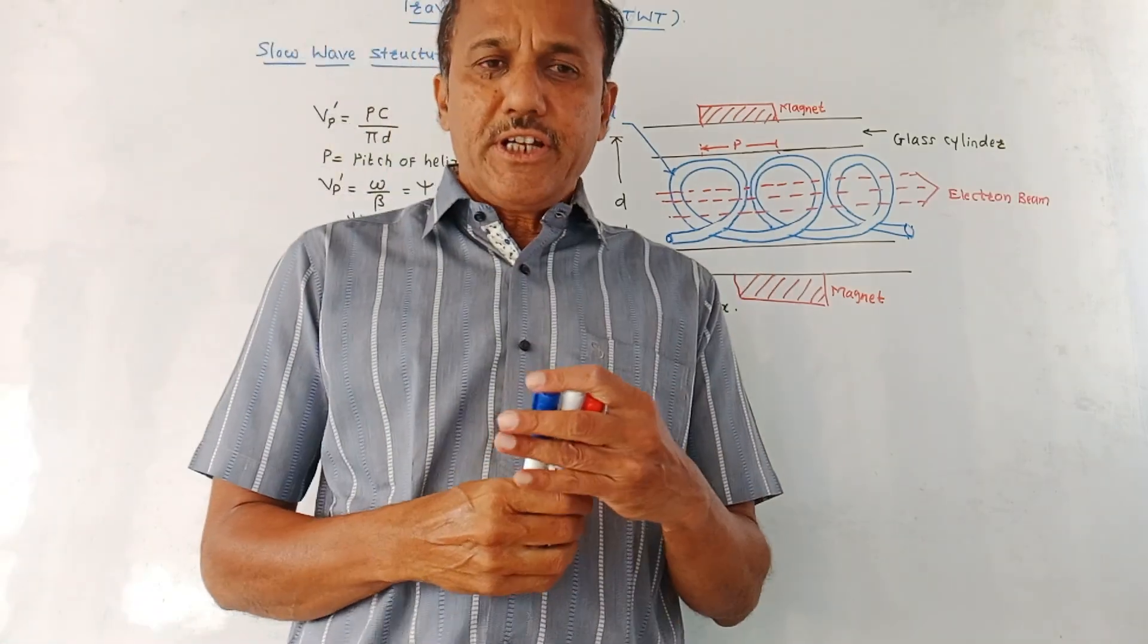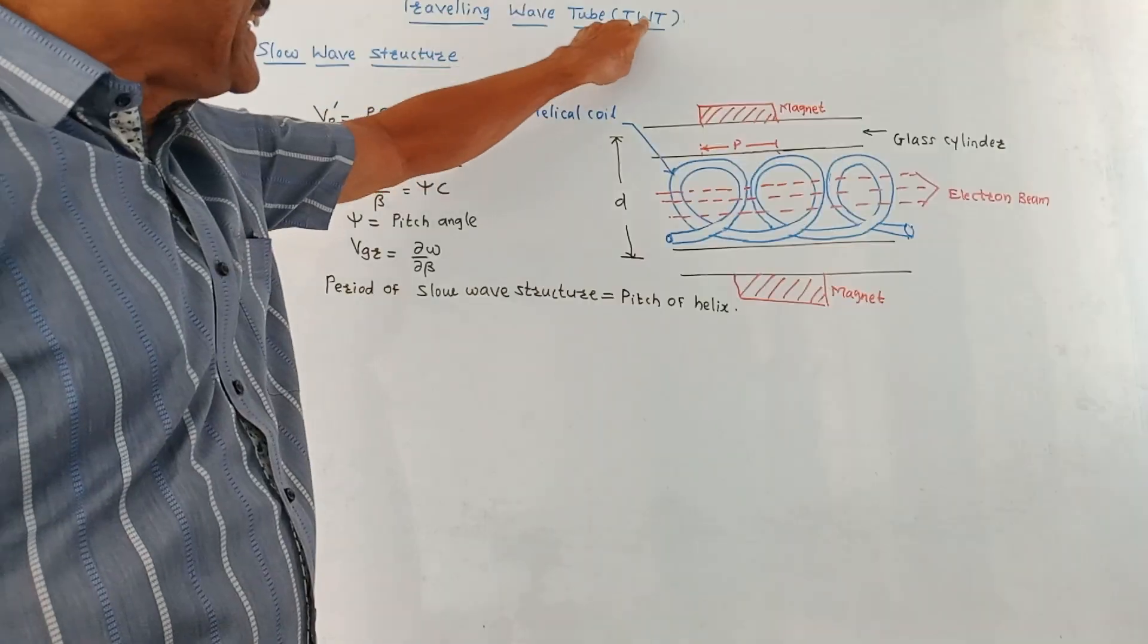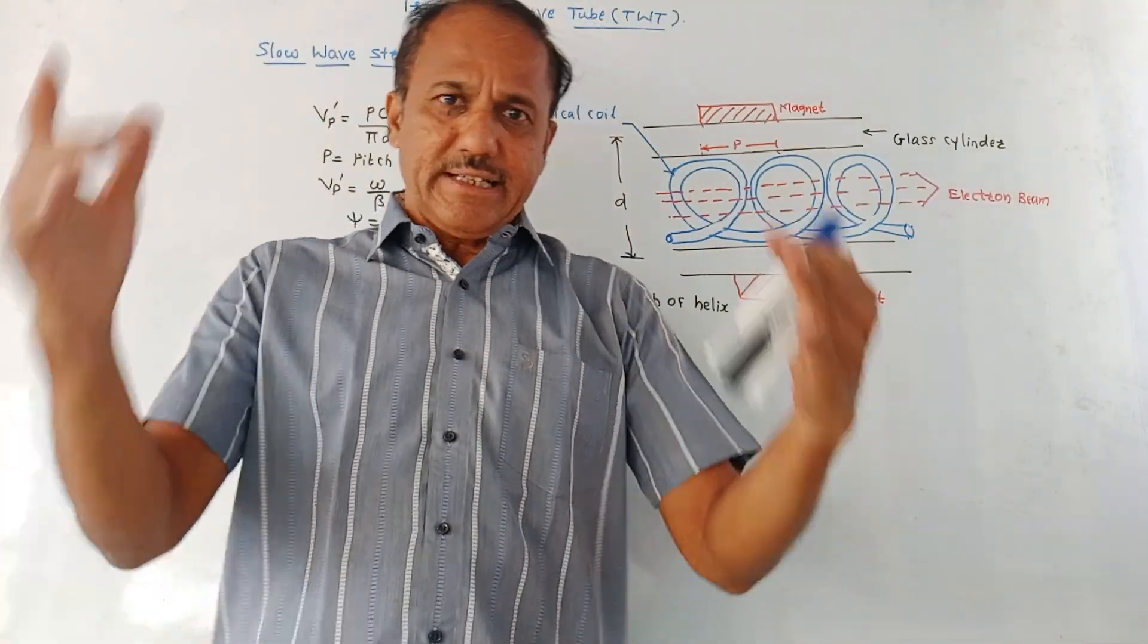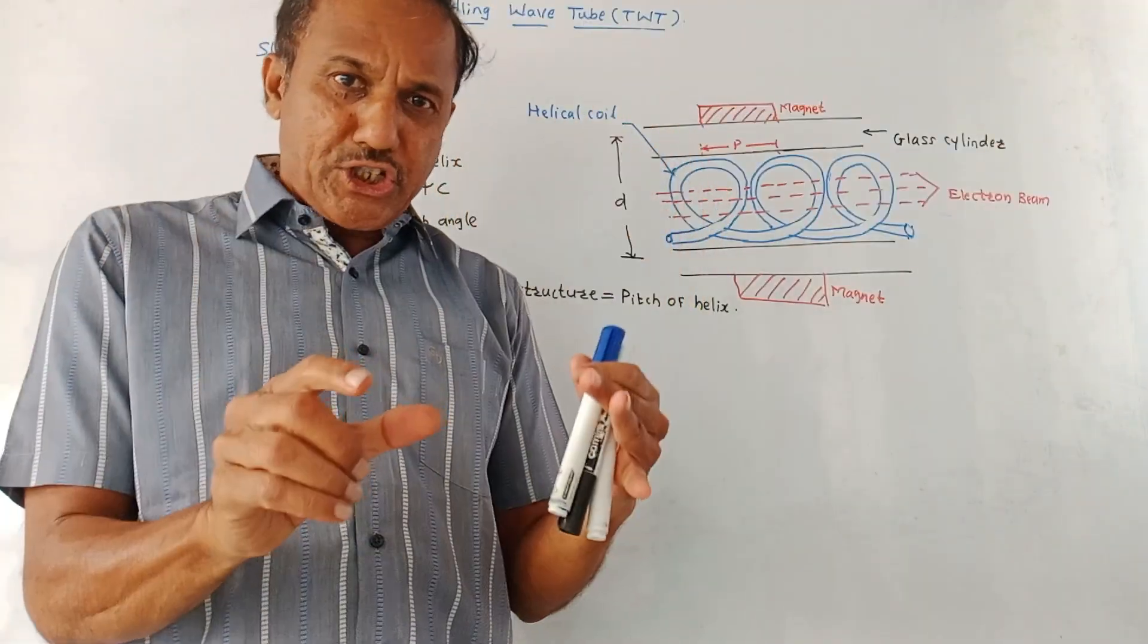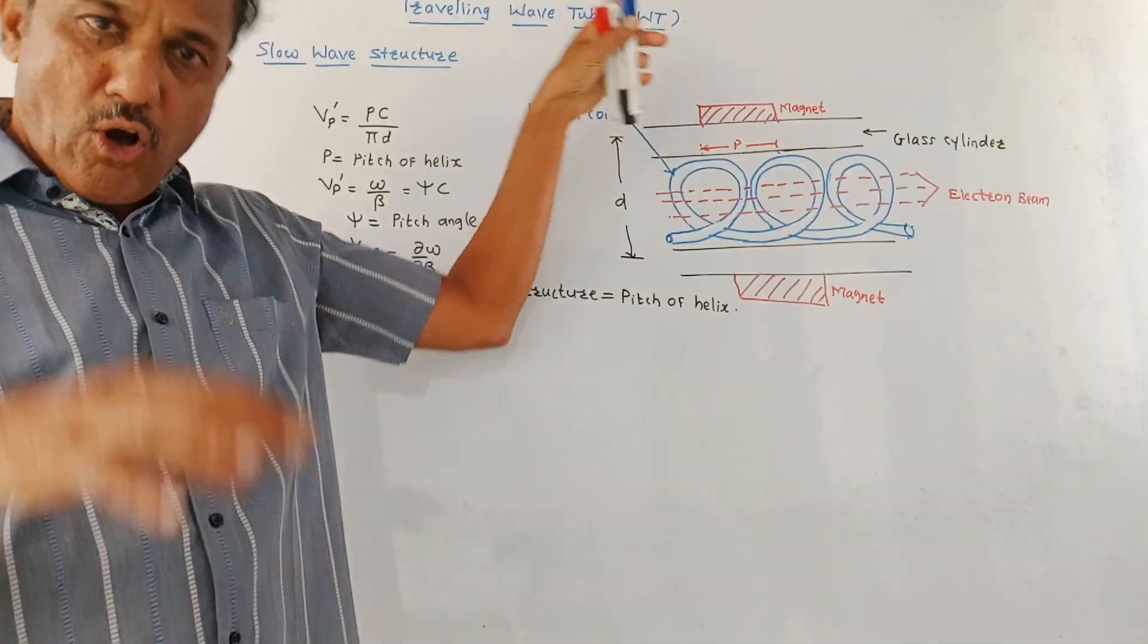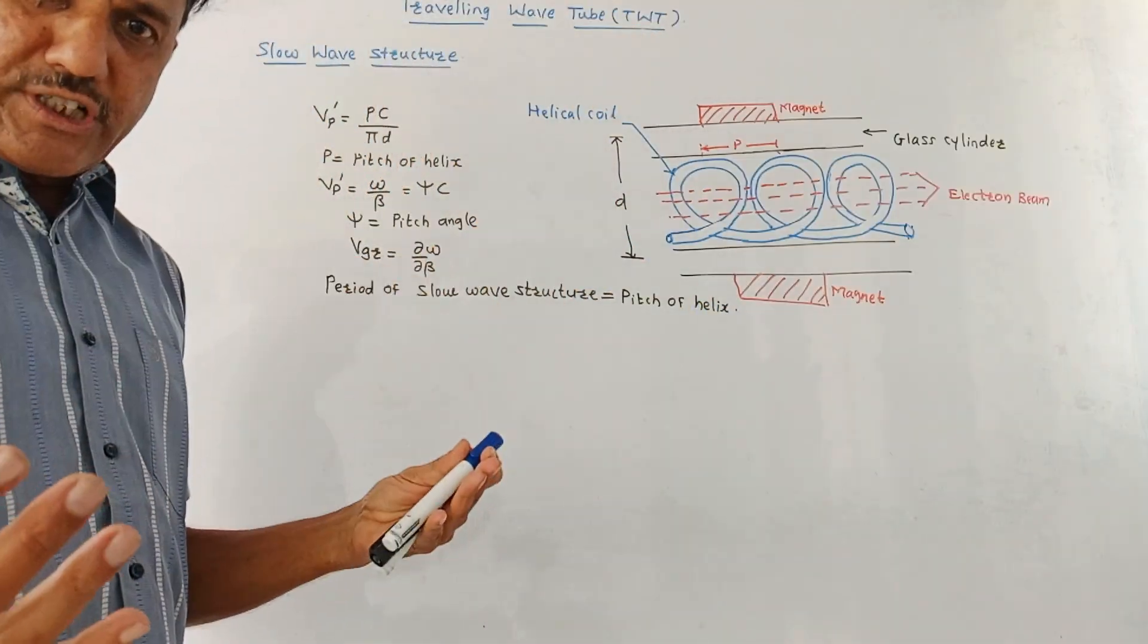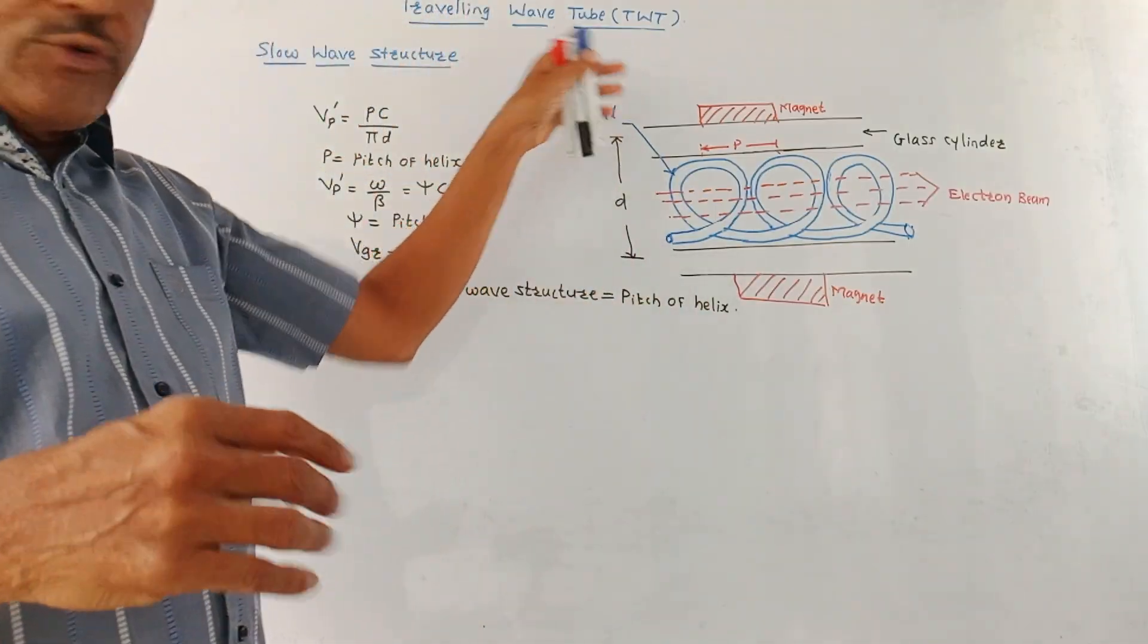Hello and welcome you all. Dear students, today's topic is traveling wave tube, that is TWT. From the exam point of view, you may explain the question like this: explain the constructional details and operation of traveling wave tube, or the question may be like this: what is the slow wave structure and explain its use in the traveling wave tube.